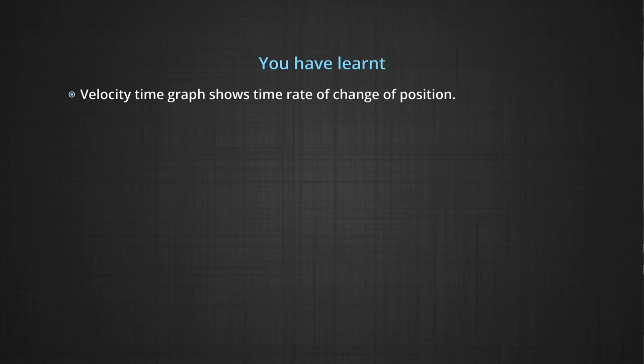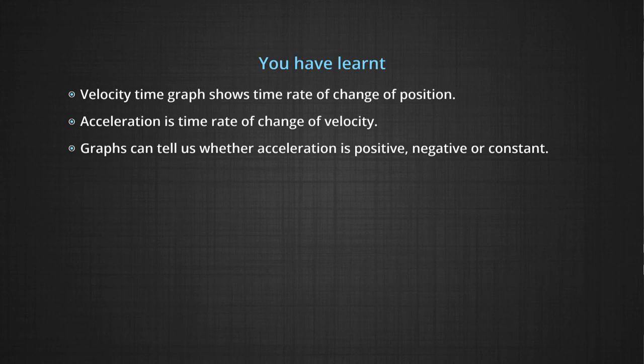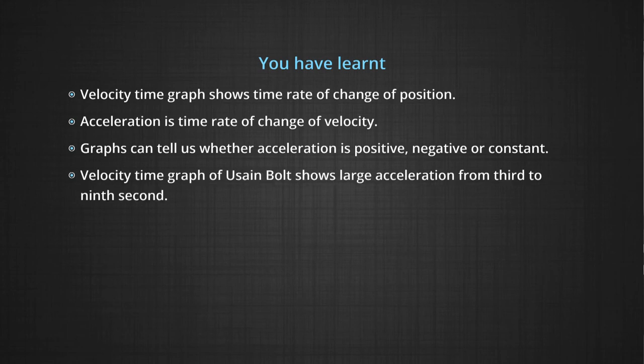You have learnt velocity time graph shows the time rate of change of position. Acceleration is time rate of change of velocity. Graphs can tell us whether the acceleration is positive, negative or constant. You saw the velocity time graph for Usain Bolt which showed very large acceleration from the third to the ninth second. You can learn to draw acceleration time graphs from the values that are given. You can make a chart for normal vehicles if you know that the force is constant on it and the acceleration is uniform. Then at different timings you can find out what would be the position, how much distance would it travel, what would be the velocity in a time interval and you can plot it. Such graphs can give you a better idea of kinematics of systems.